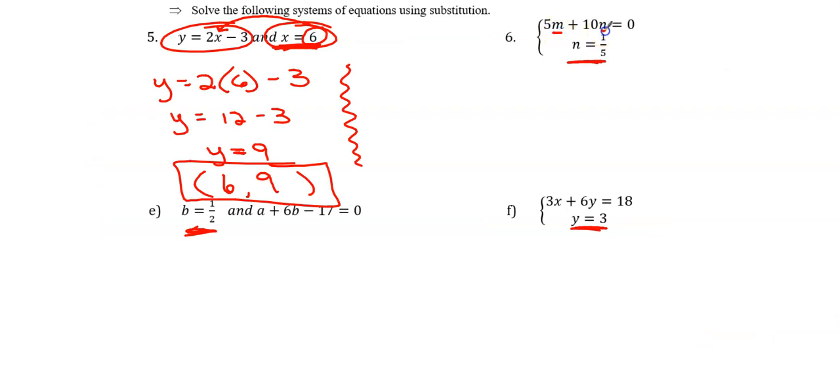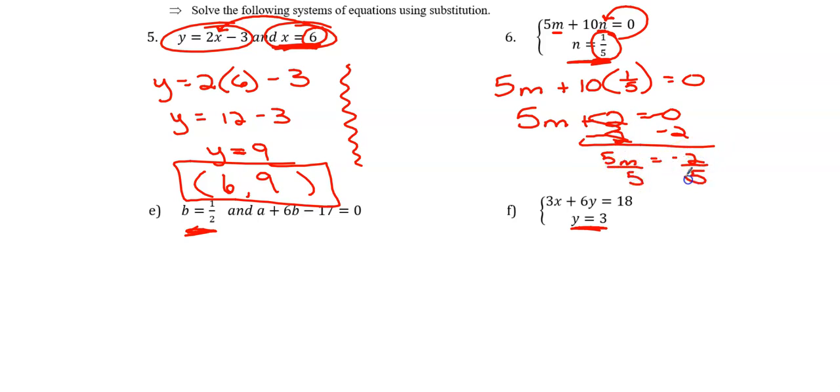On number six, I'm not playing with x and y. I'm playing with m and n. But they're just variables. It shouldn't matter to me. Since I know that n equals 1/5, I'm going to take that value and plug it into the other equation. And I get 5m plus 10 times 1/5 equals 0. And now I'm solving. 5m plus 10 times 1/5 is just 2. Now I've got to get m by itself. Minus 2. 5m equals negative 2. Divide by 5. And I get m equals negative 2/5.